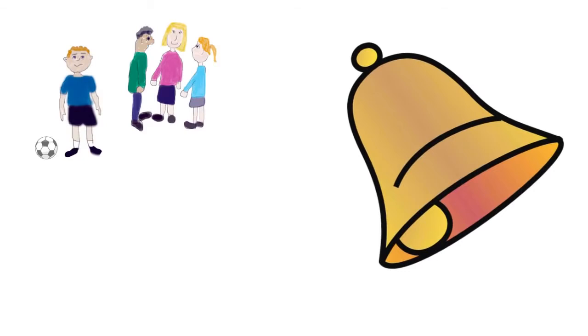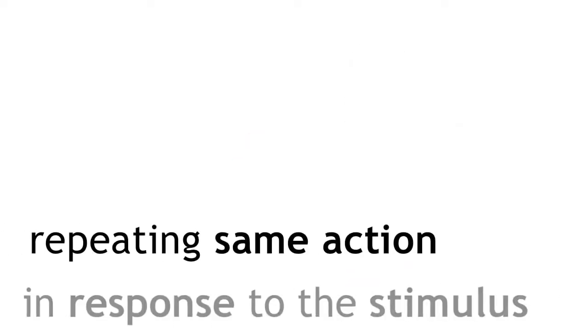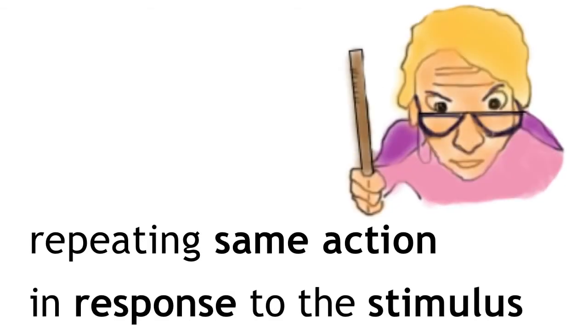When you hear the school bell ring and you go to your lesson, you are performing a learned behaviour. When you hear the bell, you know it signals that it's time to go to your next class, because you have learnt to do it by repeating the same action in response to the stimulus, so you won't get in trouble.